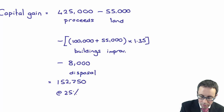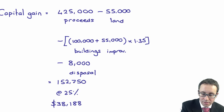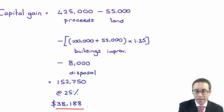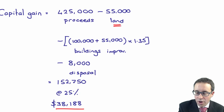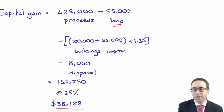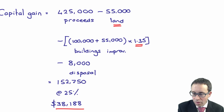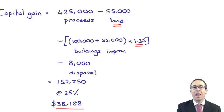At 25%, the tax payable is $38,188. The key points: land had no indexation, but buildings and the improvements were indexed by the factor of 1.35, and the disposal costs of $8,000 were an allowable expense.